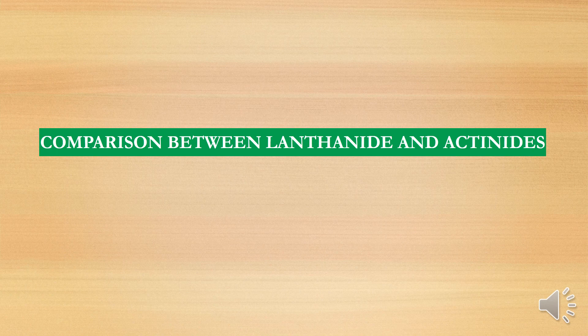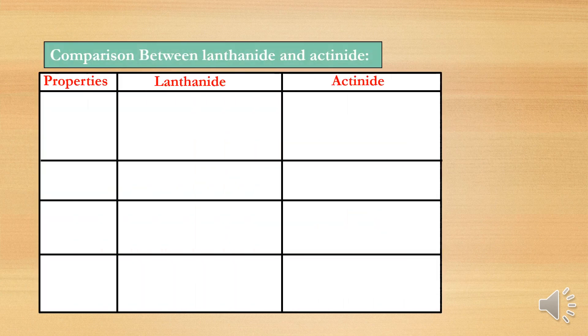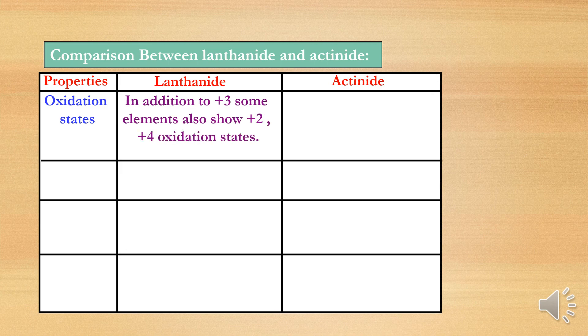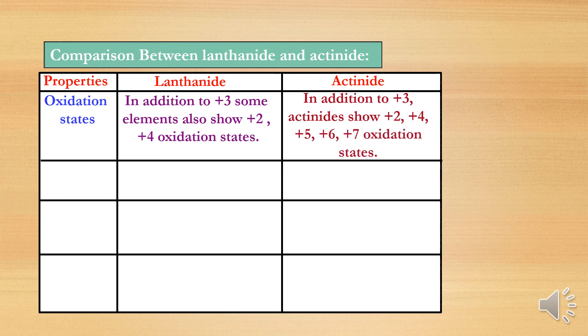The comparison between lanthanides and actinides is very important for examination purposes. Both lanthanides and actinides have +3 as the common oxidation state. However, lanthanides show only +2 and +4 as additional oxidation states, whereas actinides show variable oxidation states from +2 to +7.